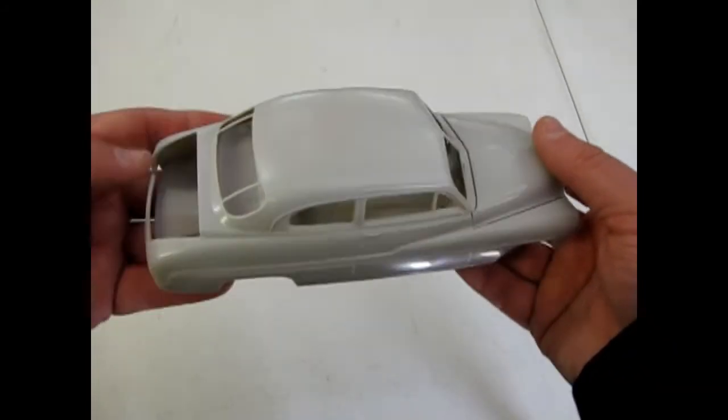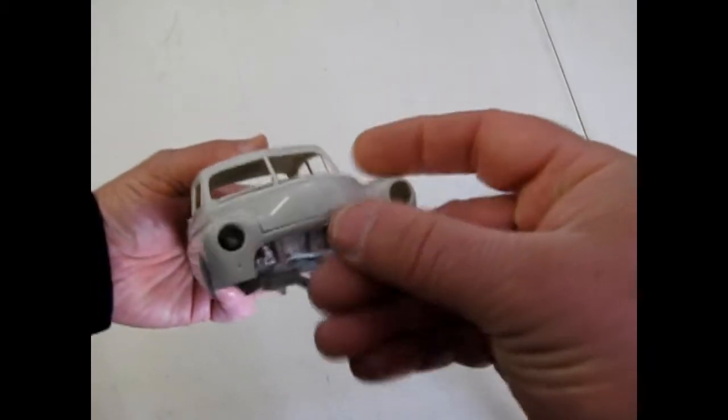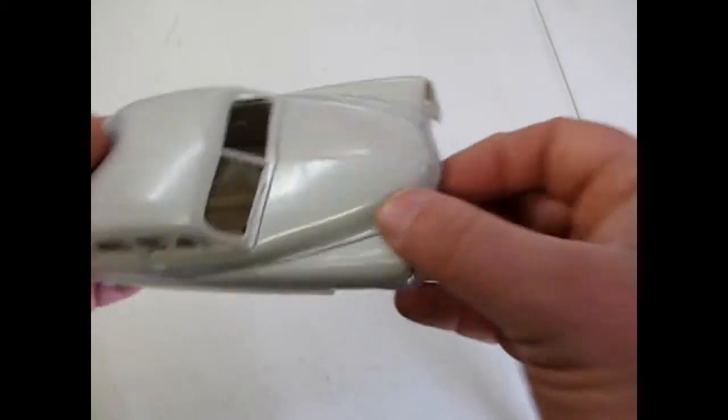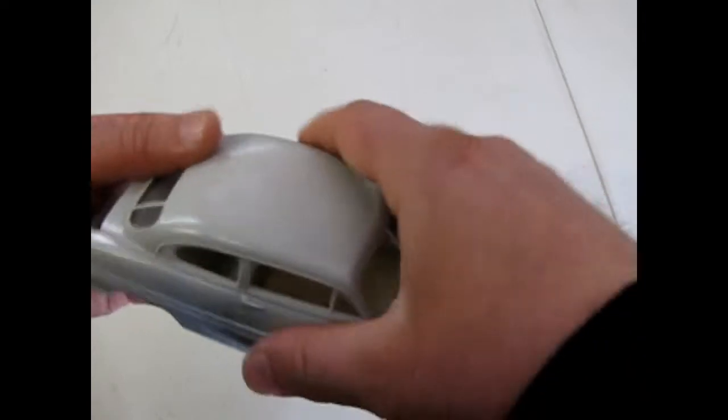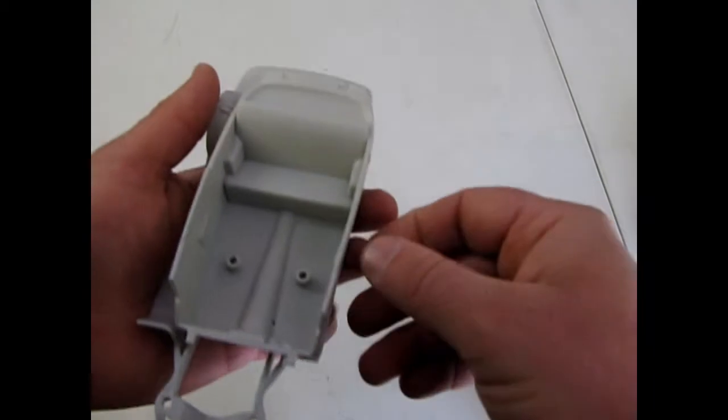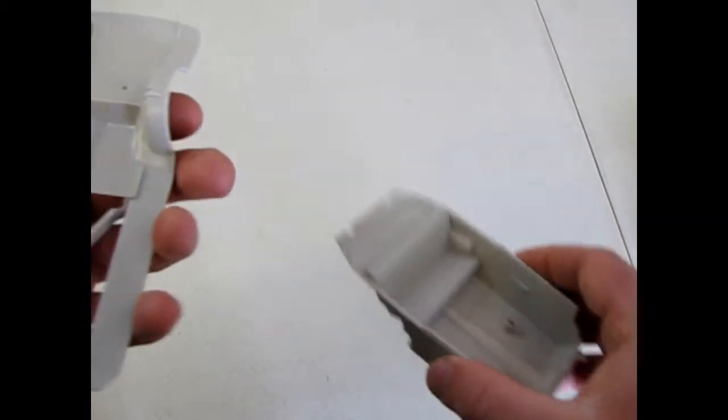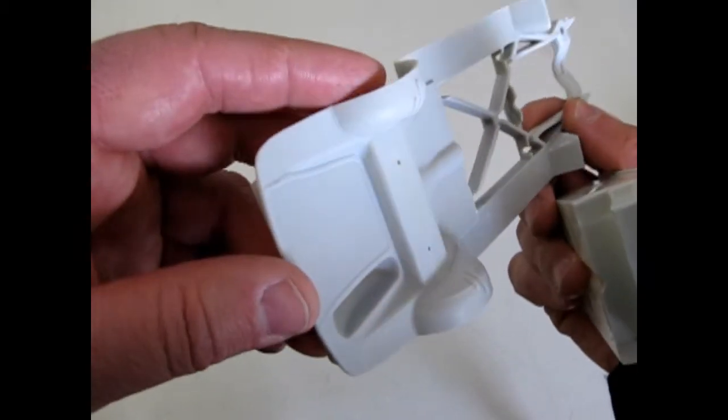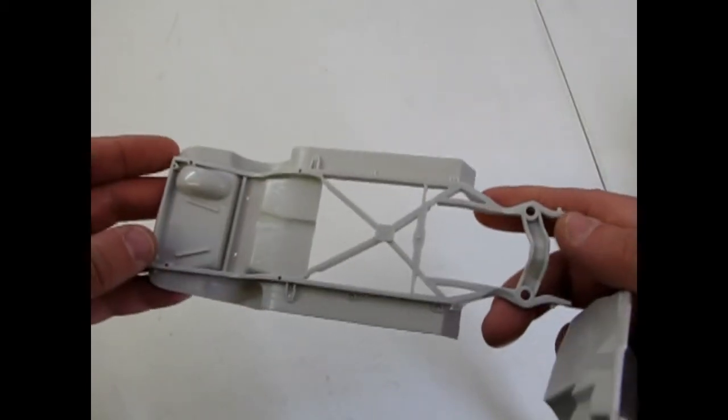And now here's our body molded in grey. Nice detail for Mercury, the big letters, big big Mercury letters on the hood. Opening hood. And there's our interior tub with the knockouts for your hinges, for your trunk lid. And as you can see it's got that nice carpet right there underneath our car.